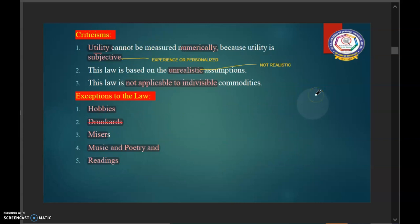Now, we are going to discuss about the criticisms of this law. Utility cannot be measured numerically because utility is subjective. So, when we are feeling hungry, we can't say that I am satisfied 2 or I am satisfied with 3. We could not calculate and it couldn't be measured numerically because it is subjective. Subjective means experience or personalized.